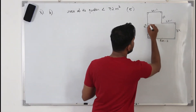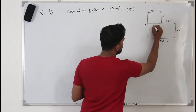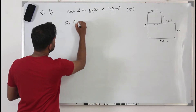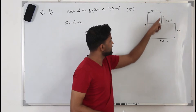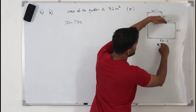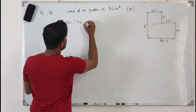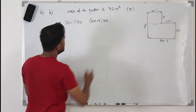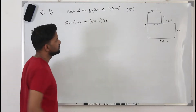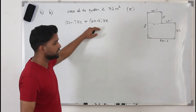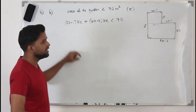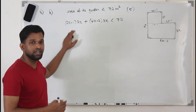For the first rectangle, the width is 2x minus 1 and the height is 2x, so its area is (2x minus 1) times 2x. For the rectangle below, the width is 3x and the height is 6x minus 2, so its area is (6x minus 2) times 3x. We add both areas together and apply the condition that the total area is less than 72 square meters.